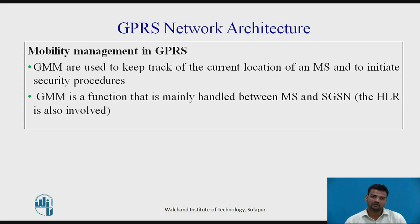Mobility management in GPRS: GPRS mobility management is used to keep track of the current location of an MS and to initiate security procedures. It is a function mainly handled between the MS and the SGSN, with the HLR also involved. Similar to GSM, when a mobile subscriber visits a new location, it must be registered to the HLR and the VLR — that procedure is similar to mobility management in GPRS.